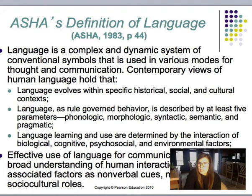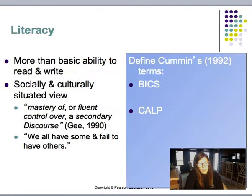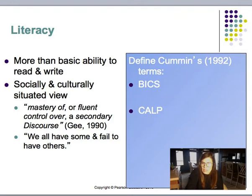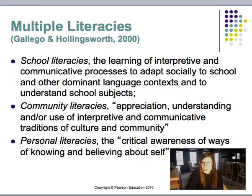Language is a complex and dynamic system of conventional systems used in various modes for thought and communication. Effective use of language for communication requires a broad understanding of human interaction, including nonverbal cues, motivation, and sociocultural rules. Literacy is a language system that is mapped onto spoken language, not a separate system — it's more than the basic ability to read and write. We have two terms: BICS, Basic Interpersonal Communication Skills, and CALP, Cognitive Academic Language Proficiencies. There are also multiple literacies: school literacies, community literacies, and personal literacies.